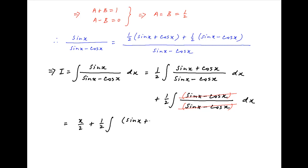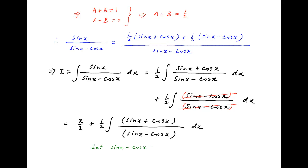Now let sinx minus cosx be equal to t. Taking the derivative of both sides, we get (cosx plus sinx) dx equals dt.